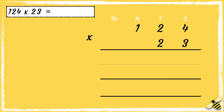Now that we're set up, we're ready to multiply. First we'll multiply 3 by 4 — 3 times 4 is 12. We can drop the 1 ten below in the tens column. Then we can multiply 3 by 2 tens — 3 times 2 is 6, and then add the extra 1, so it's 7.